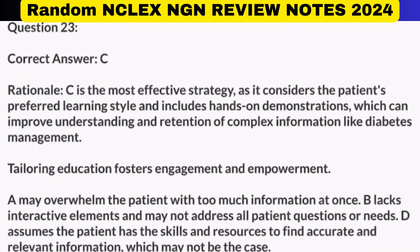Correct answer: C. Rationale: C is the most effective strategy, as it considers the patient's preferred learning style and includes hands-on demonstrations, which can improve understanding and retention of complex information like diabetes management. Tailoring education fosters engagement and empowerment. A may overwhelm the patient with too much information at once. B lacks interactive elements and may not address all patient questions or needs. D assumes the patient has the skills and resources to find accurate and relevant information, which may not be the case.